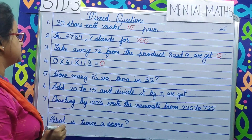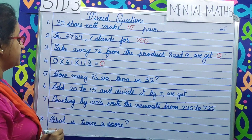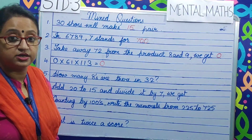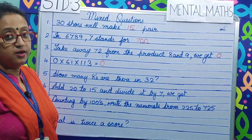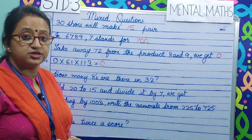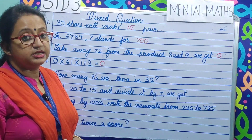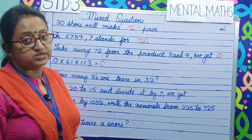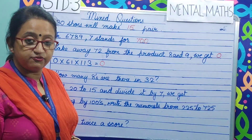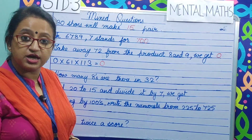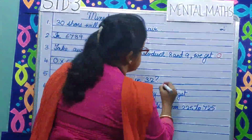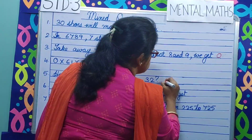Question number 5. How many 8s are there in 32? Let us count the table of 8: 8 ones are 8, 8 twos are 16, 8 threes are 24, 8 fours are 32. So the answer is 4.